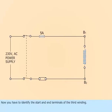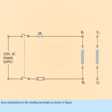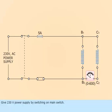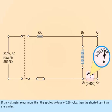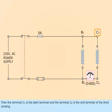Now you have to identify the start and end terminals of the third winding. Give connections to the winding terminals as shown in figure. If the voltmeter reads more than the applied voltage of 230 volts, then the shorted terminals are similar. Assume that the voltmeter reads more than 230 volts. Then terminal C1 is the start terminal and terminal C2 is the end terminal of the third winding.